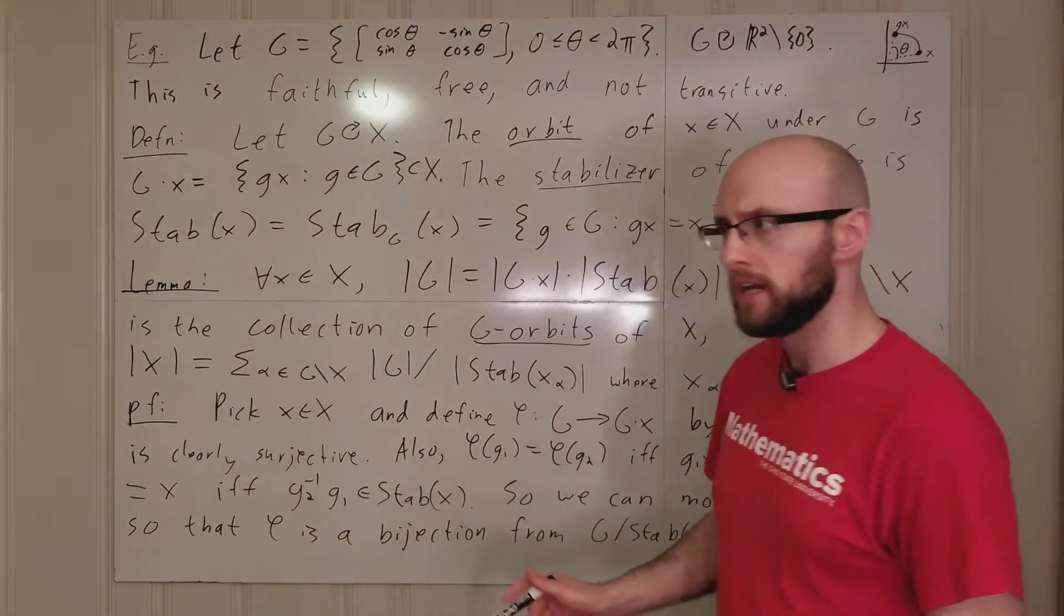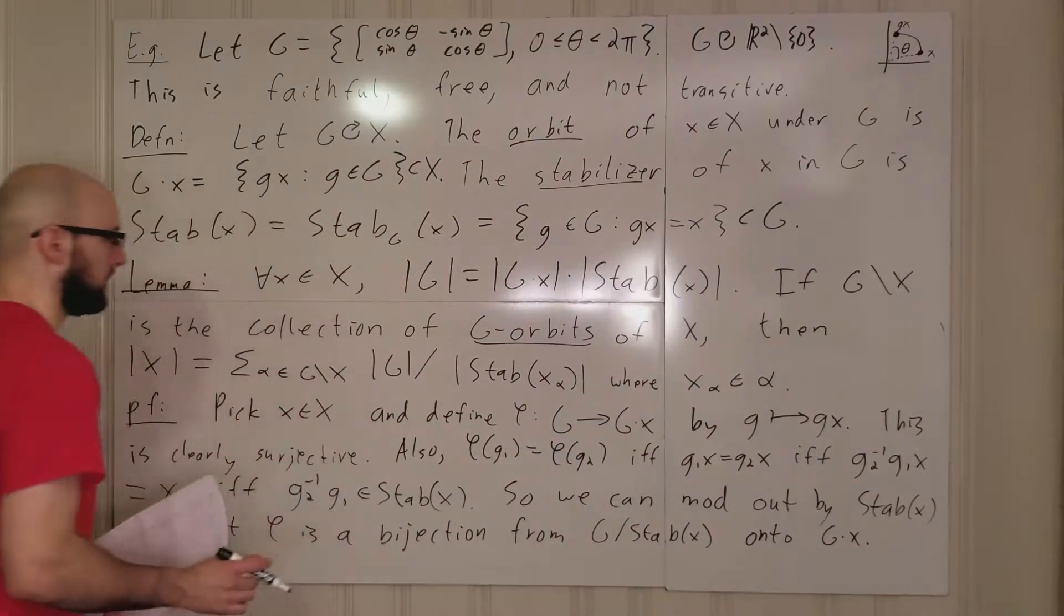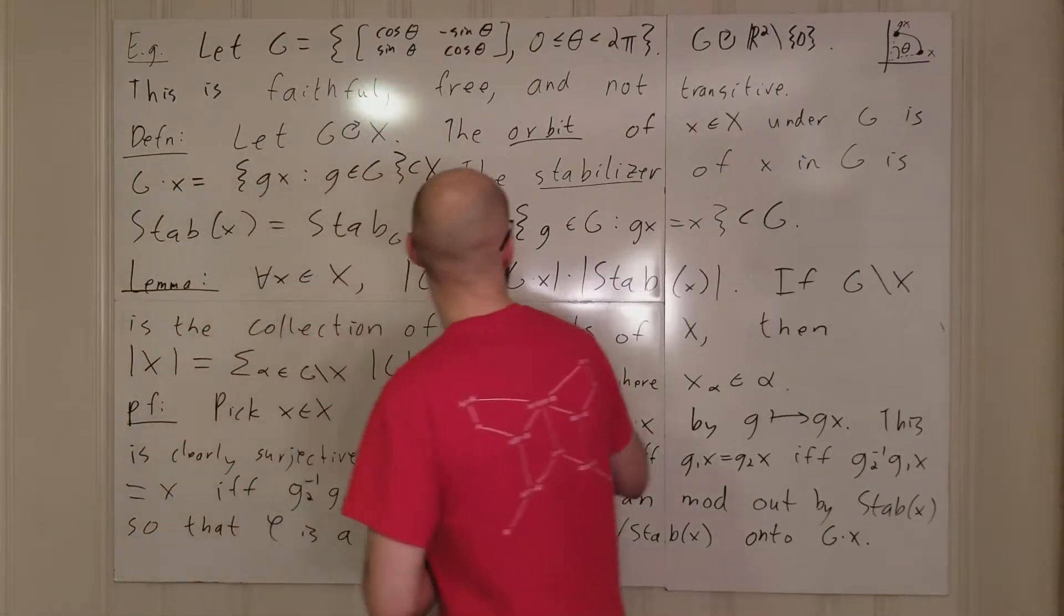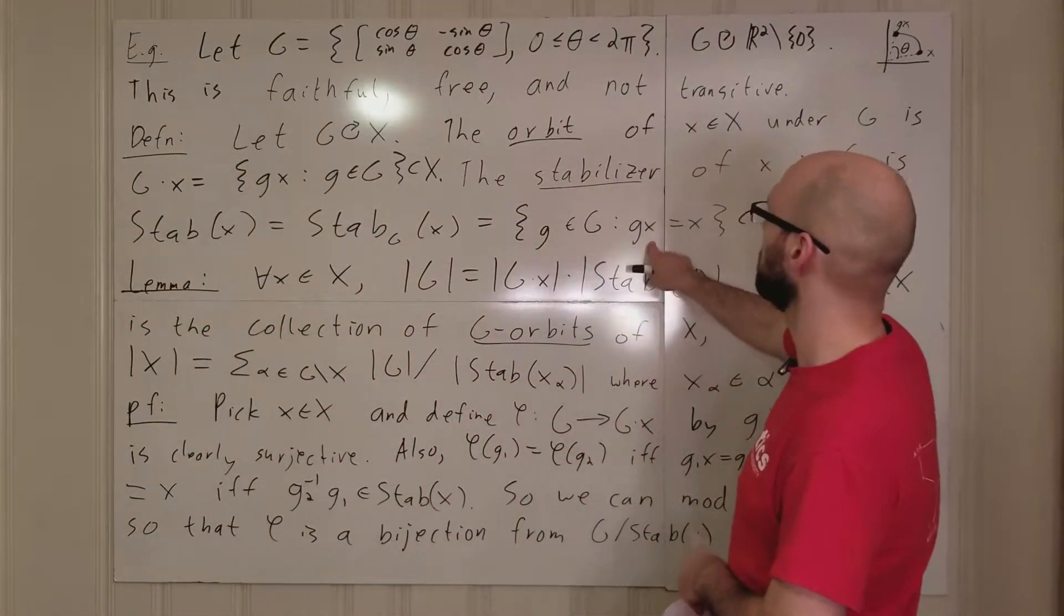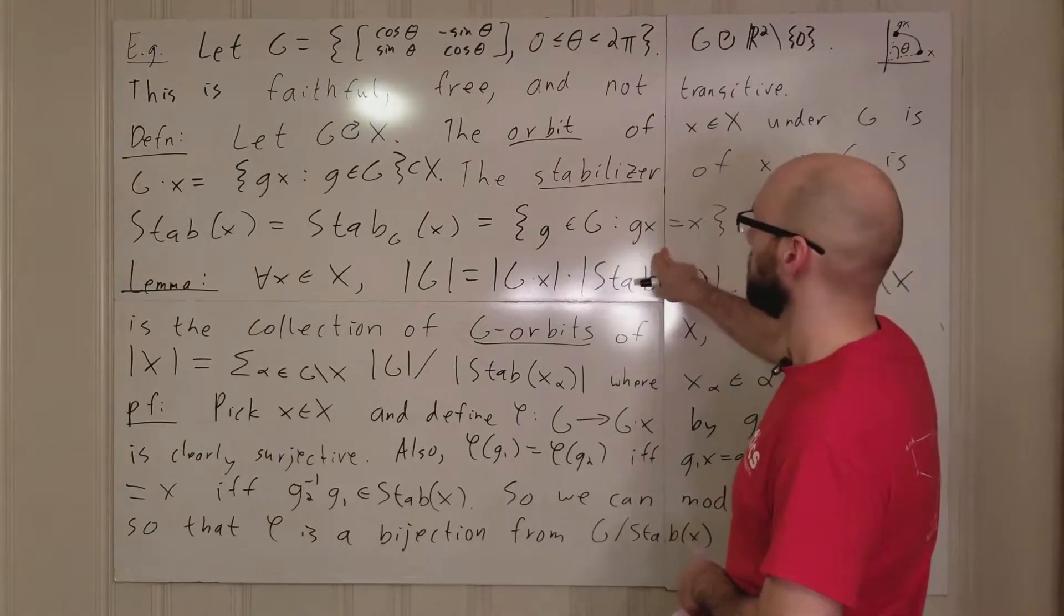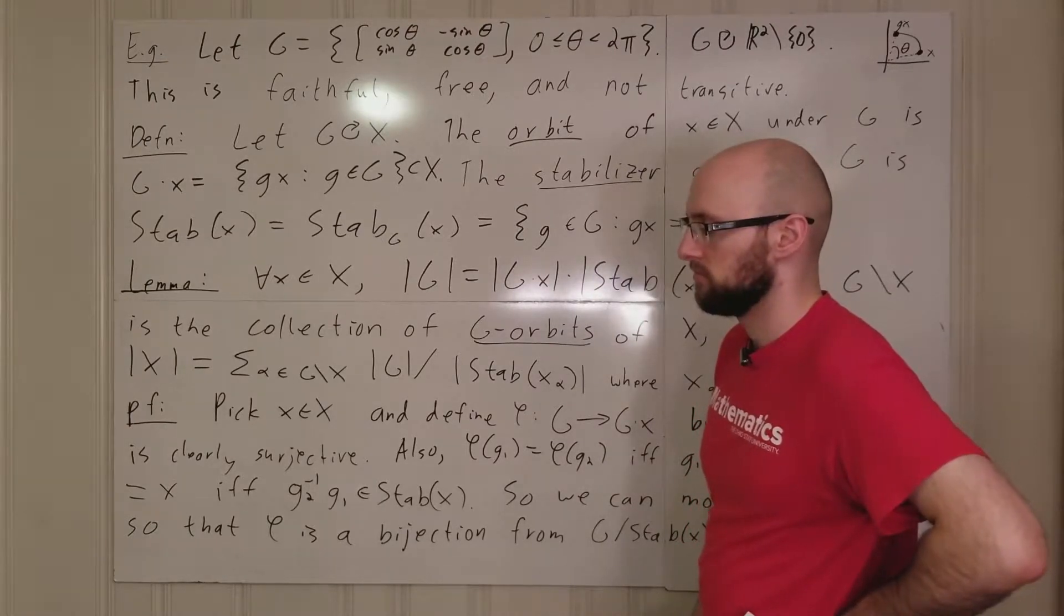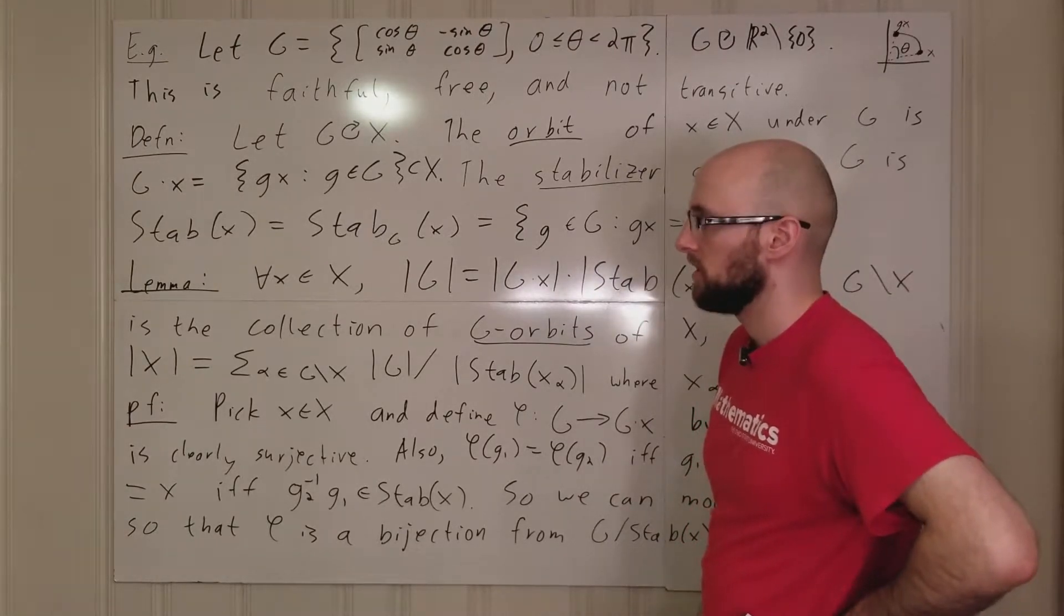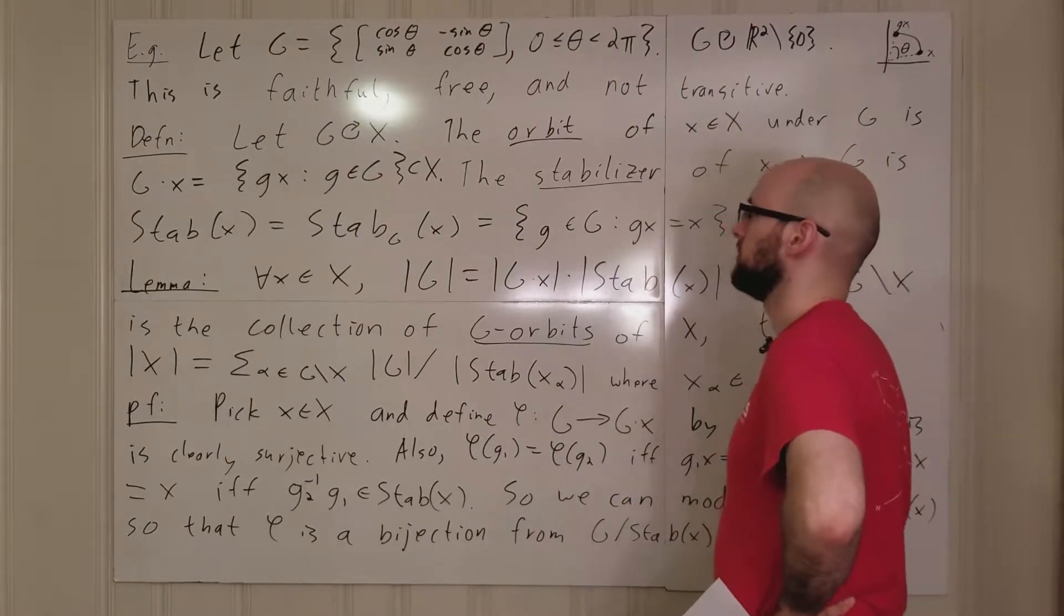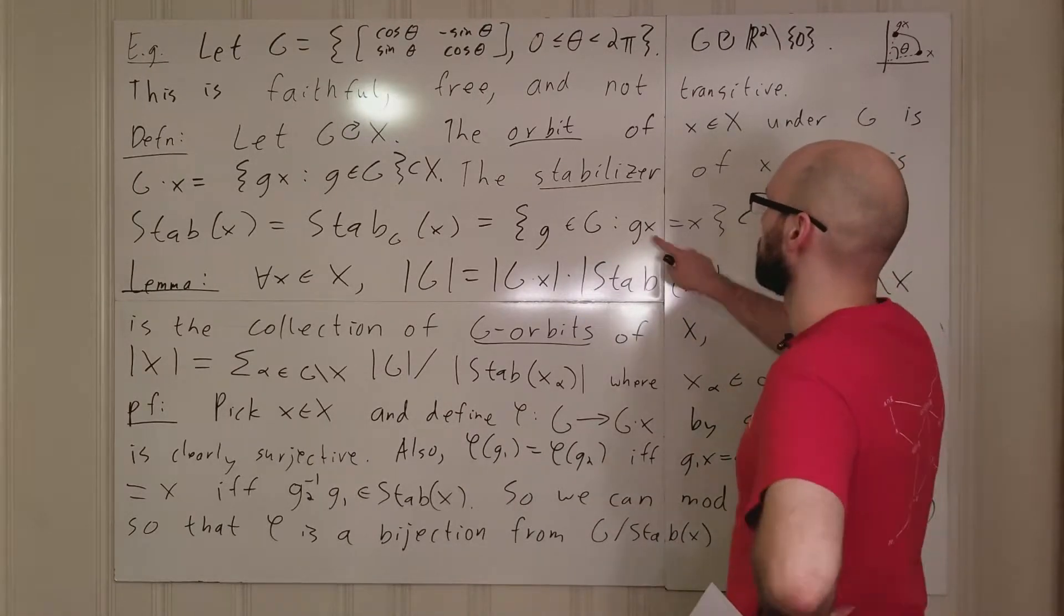So this is the part where I actually was a little worried when I first was writing this down. So you can prove that the stabilizer of an element is a subgroup of g.